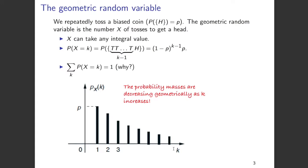That probability is the probability of getting k minus 1 tails in succession — that is (1 minus p) for each tail — multiplied k minus 1 times. Hence you have (1 minus p) to the power of k minus 1, and then you get a head which is probability p. So the probability of X equals k, which is the number of tosses to get the first head, is (1 minus p)^(k-1) multiplied with p.